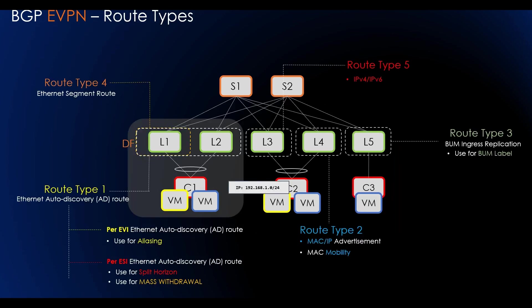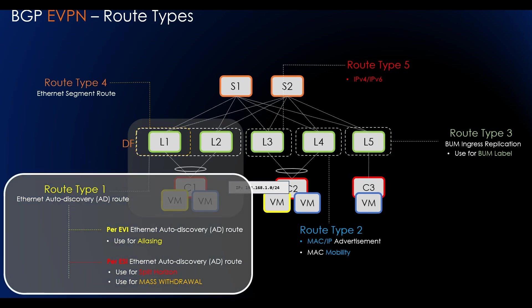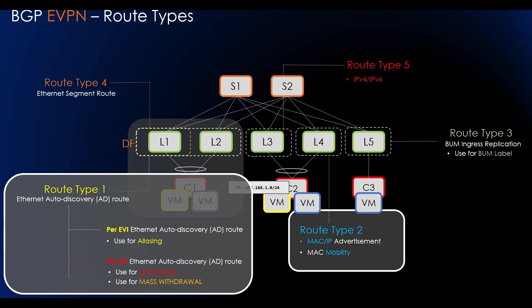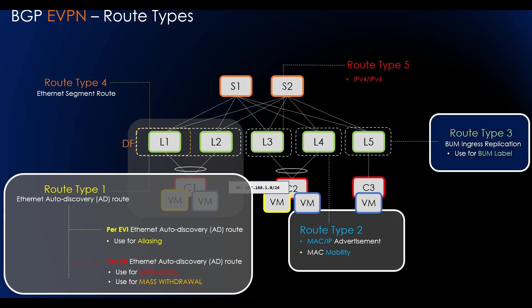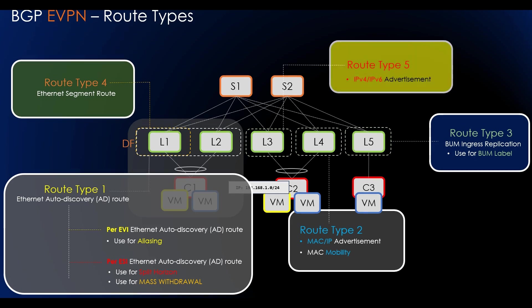EVPN has many features. In order to address those features, it has some route types. We have route type 1, which is Ethernet auto-discovery route, which is being used for aliasing, split horizon, and mass withdrawal. To advertise the MAC and IP we have route type 2. To control the BUM traffic we have route type 3. For multi-homing, in order to select the designated forwarder, we have Ethernet segment routes. To advertise IPv4 and IPv6 we have route type 5.